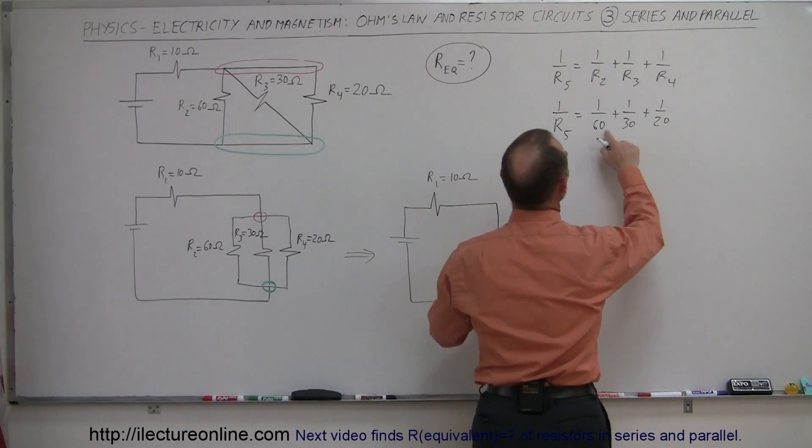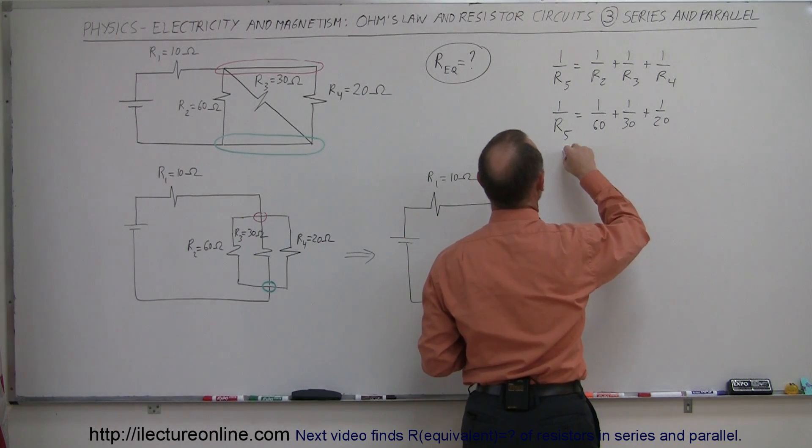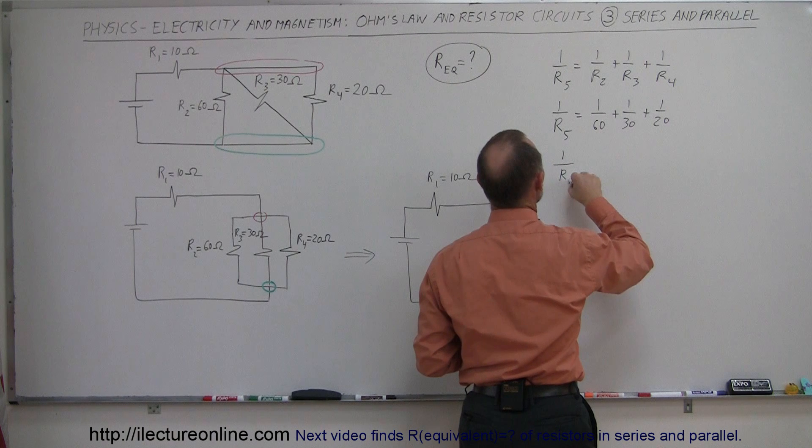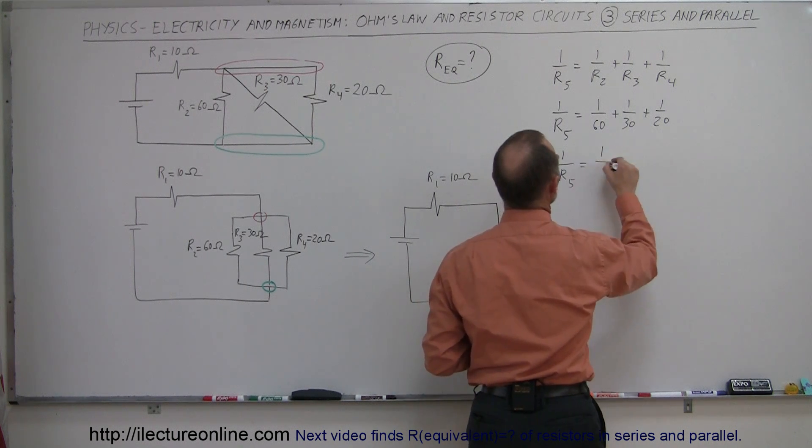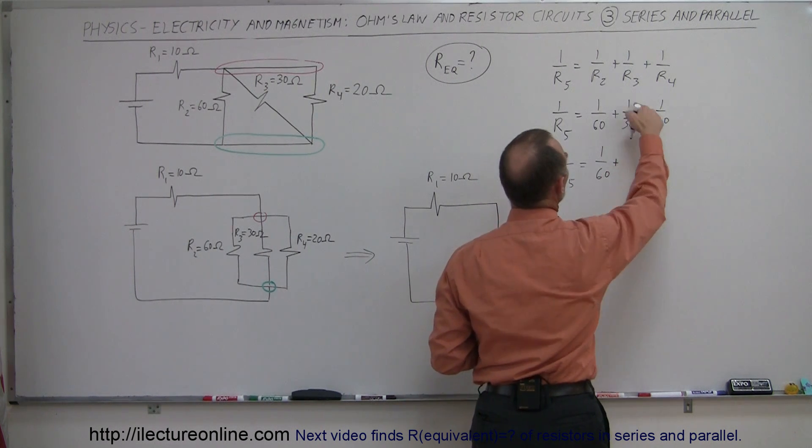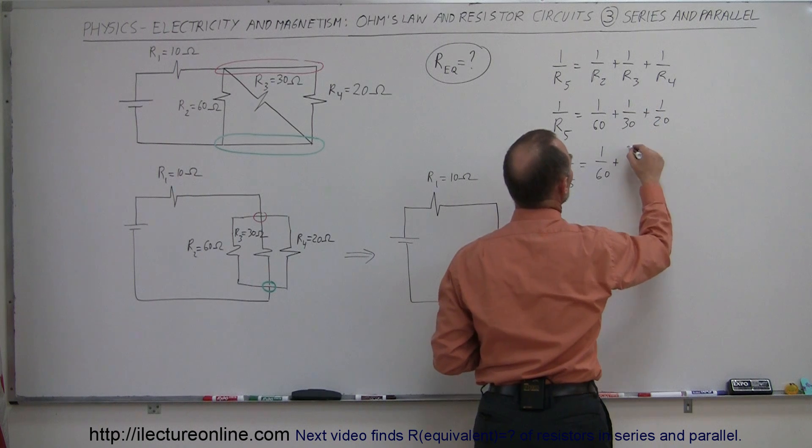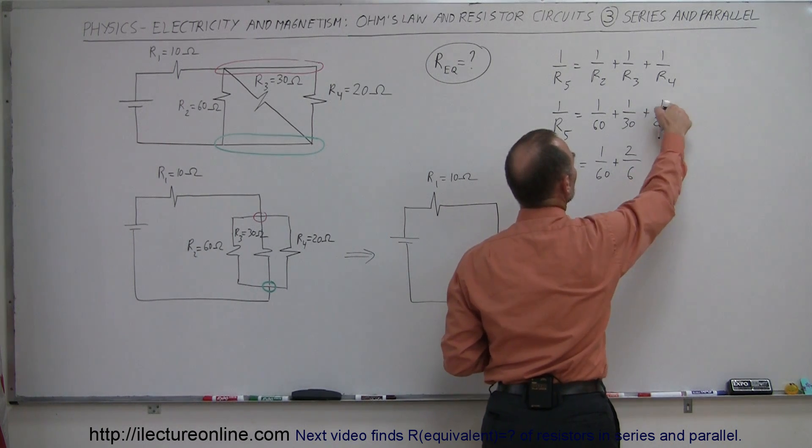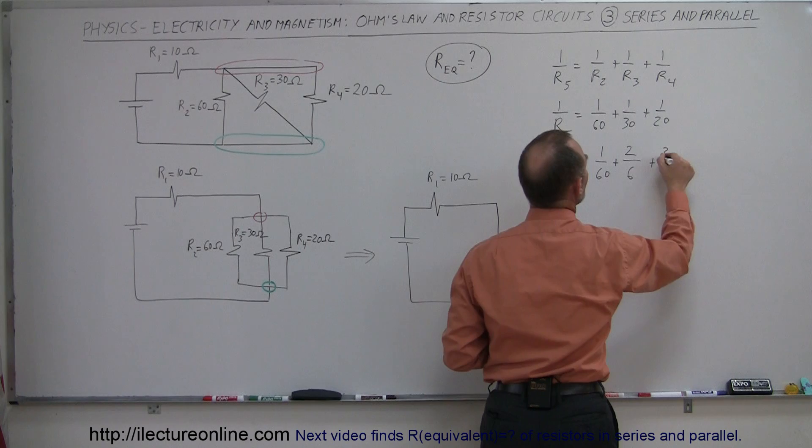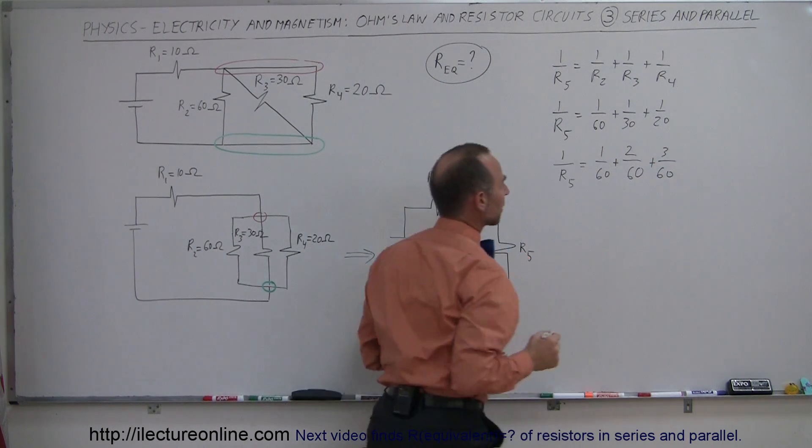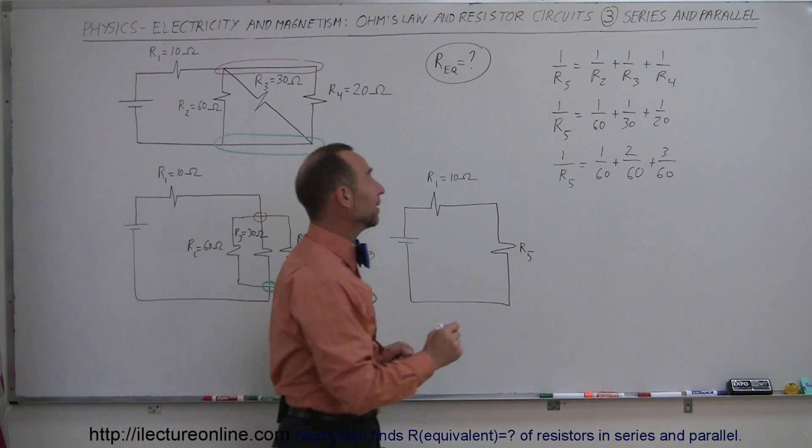Notice that 30 fits into 60 evenly, so we can write 1 over R5. Let me do it like this, so you can see a little bit more how that works. So we have 1 over 60, plus we multiply both the top and the bottom by 2, we get 2 over 60. We multiply both the top and the bottom by 3, we get 3 over 60, like so. So now we have everything over a common denominator.